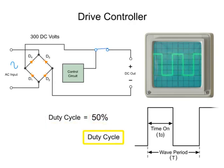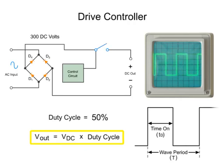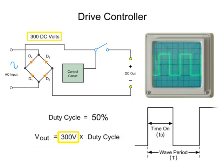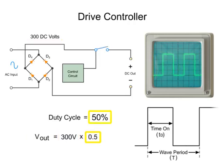Multiplying the duty cycle times the input voltage will give you the voltage output. In this example, a 300 volt input will be modulated by 50%, so the final voltage delivered to the load or motor is 150 volts.